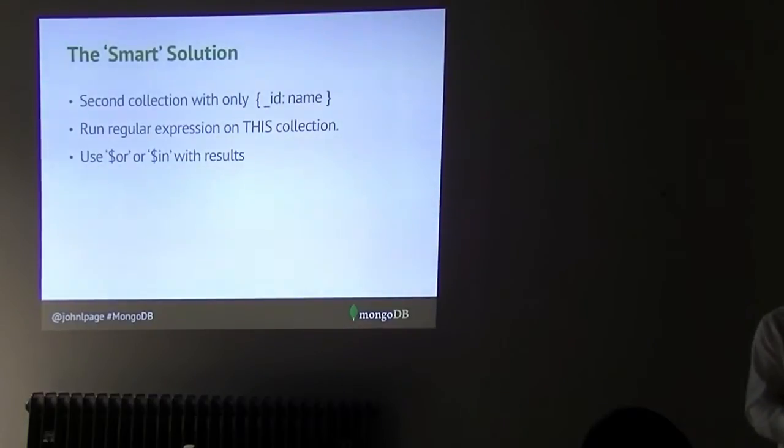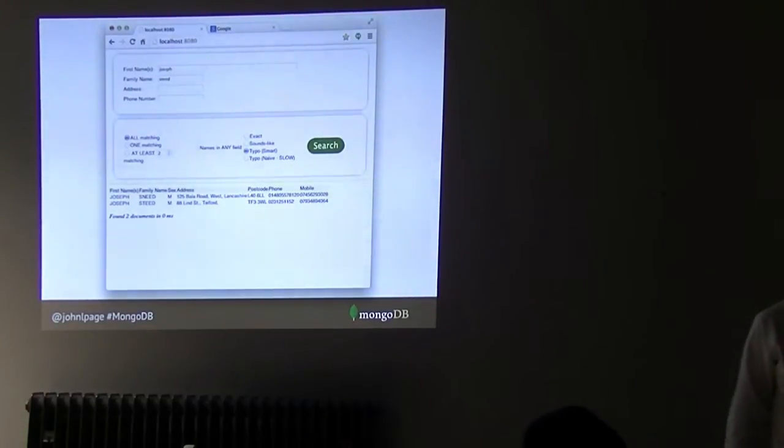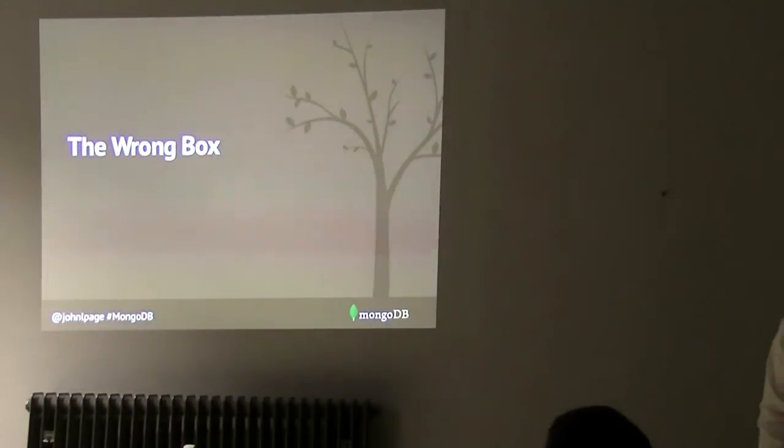This collection will typically only have three or four thousand things in it. It will be hundreds of kilobytes, megabytes at most. Your regular expression will run in milliseconds. It will return you a list of all the names that match that pattern. Then you use that with an in or an or clause to search the main set of data. While you're at it, if you're looking for wildcard searching, you could use the same trick. And if I do the same query using this, it's less than one millisecond versus 92 seconds. A definite improvement.